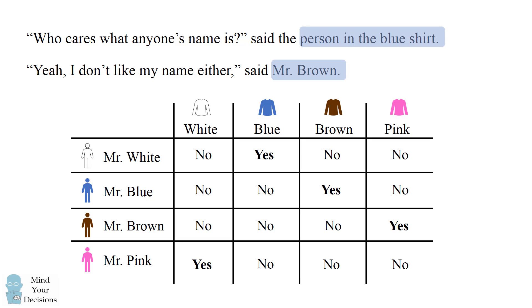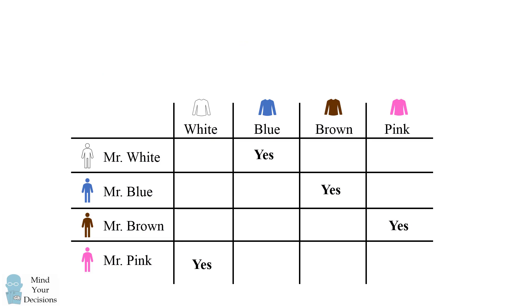So this very last statement brings it all together, and we can figure out that Mr. White is wearing a blue shirt, Mr. Blue is wearing a brown shirt, Mr. Brown is wearing a pink shirt, and Mr. Pink is wearing a white shirt.